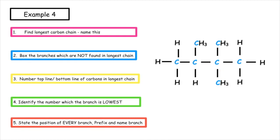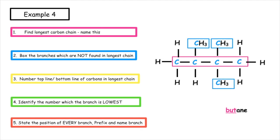We find the longest carbon chain - in this example it's four carbons, so the name of the alkane is butane. We put boxes around the branches and number the top and bottom carbons in opposite directions. We have three branches this time. The lowest position the branches can be is two or three. Using the bottom line, branches on either side of that carbon can be on position two. Stating every position of every branch, the name of this is 2,2,3-trimethylbutane.